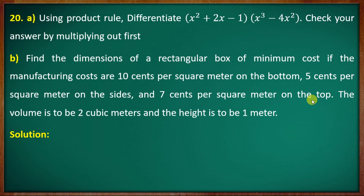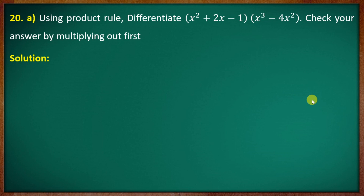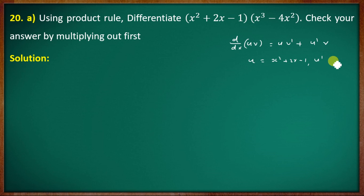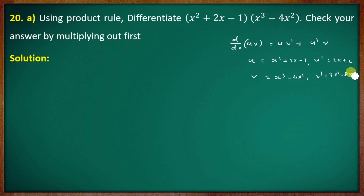First, we apply the product rule. We need to differentiate using d/dx(uv). Working out the derivatives: d/dx of (x³ − 4x²) gives 3x² − 8x.